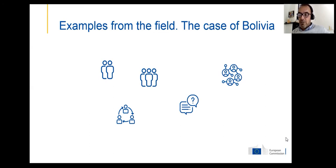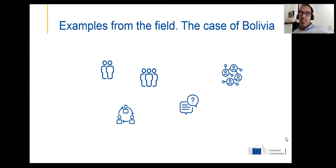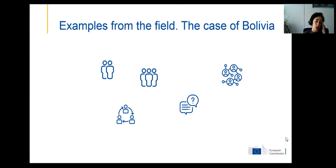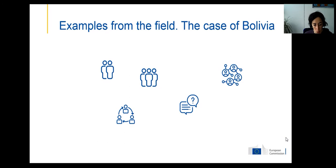I thought from then on we would be doing this in every budget support program because it was a fantastic tool for the delegation. However, my impression is that we haven't used it much. I'm here to tell you it's easy, it's cheap, it's effective, and it puts you in a much better position in policy dialogue. When you present your disbursement dossier to your director at the end of the year, being able to highlight three or four good things done in capacity building takes you a very long way. This RAC methodology is public — it's on the internet and on CapacityDev.